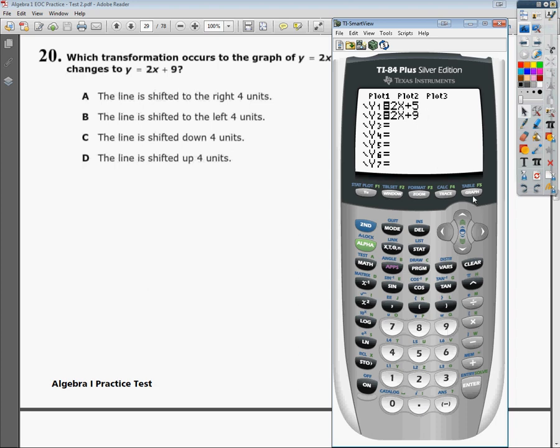And then I'm just going to watch the graphs to see what's different about them. There's the first one, and there's the second one. As you can see, it didn't shift to the left or to the right. Look at the point where it crosses the axis.